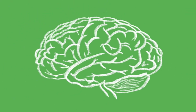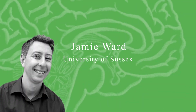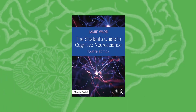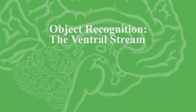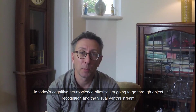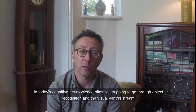Cognitive Neuroscience Bitesize with Jamie Ward, University of Sussex, author of The Student's Guide to Cognitive Neuroscience and The Student's Guide to Social Neuroscience. In today's Cognitive Neuroscience Bitesize, I'm going to go through object recognition and the visual ventral stream.